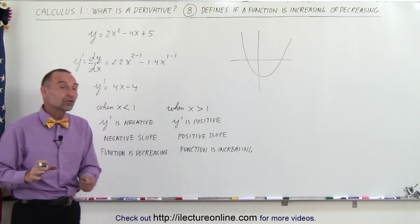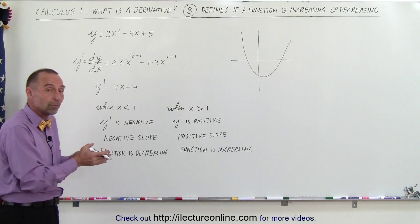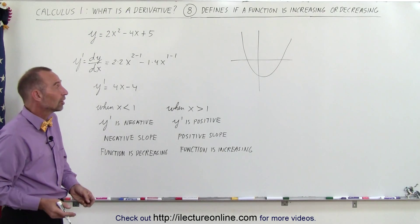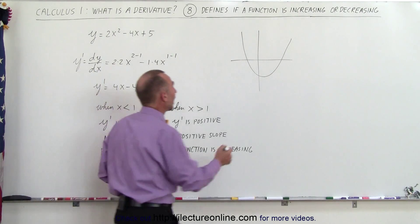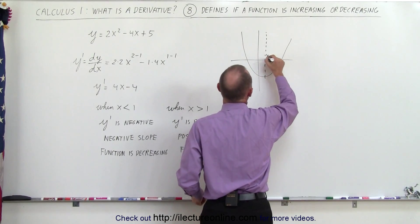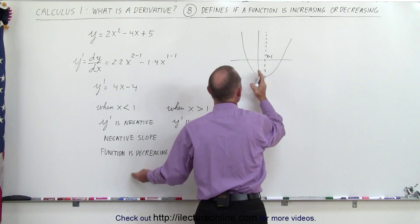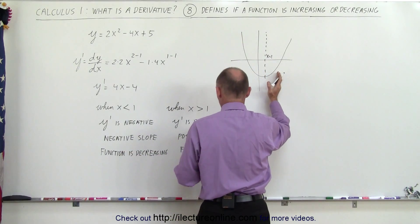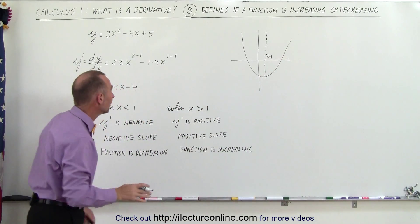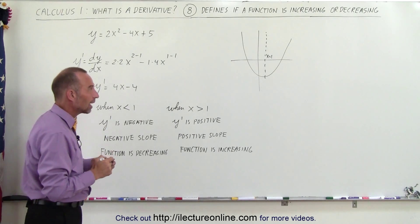So you can see that the derivative tells you all kinds of things. In this case, we can see that it tells you when the slope is negative, when the slope is positive—in other words, when the function is decreasing, when the function is increasing. So that means that at some point when x = 1, you know to the left of that the slope is negative and the function is decreasing. To the right of that, the slope is positive and the function is increasing. So that's how you can tell by taking the derivative of a function what is going on with the function.